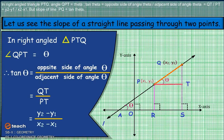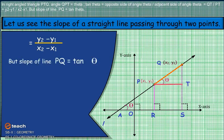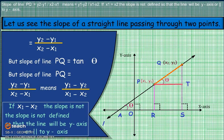In right angle triangle PTQ, angle QPT equals theta. Therefore, tan(theta) equals the opposite side of angle theta divided by the adjacent side of angle theta, which equals QT / PT = (y2 − y1) / (x2 − x1). The slope of line PQ equals tan(theta). Slope of line PQ = (y2 − y1) / (x2 − x1), also equal to (y1 − y2) / (x1 − x2). If x1 equals x2, the slope is not defined — the line will be the y-axis or parallel to the y-axis.